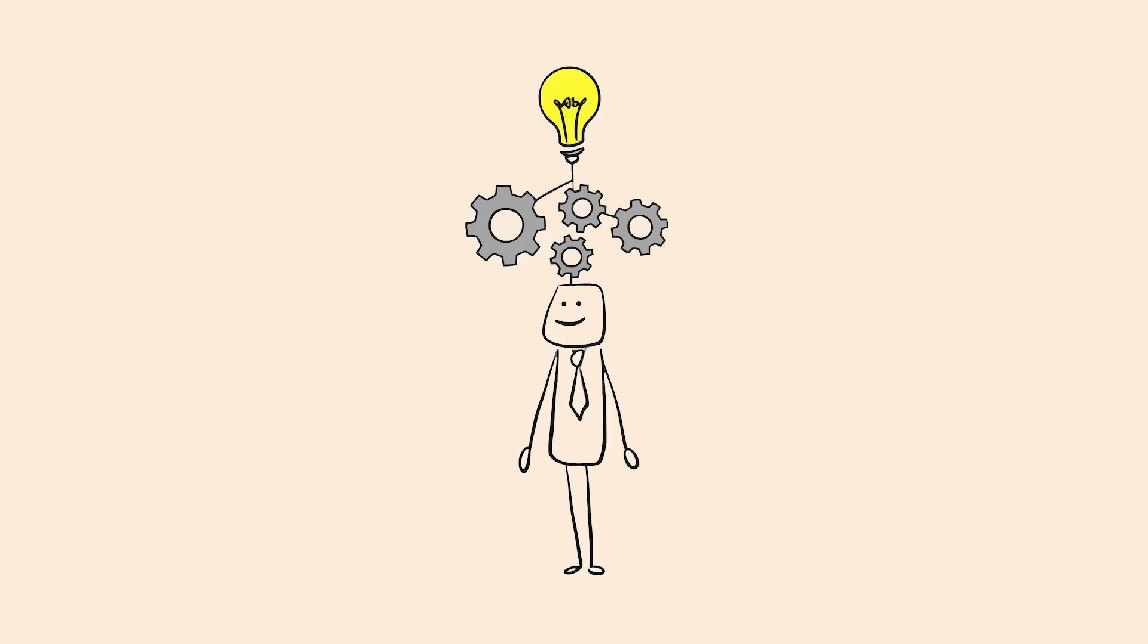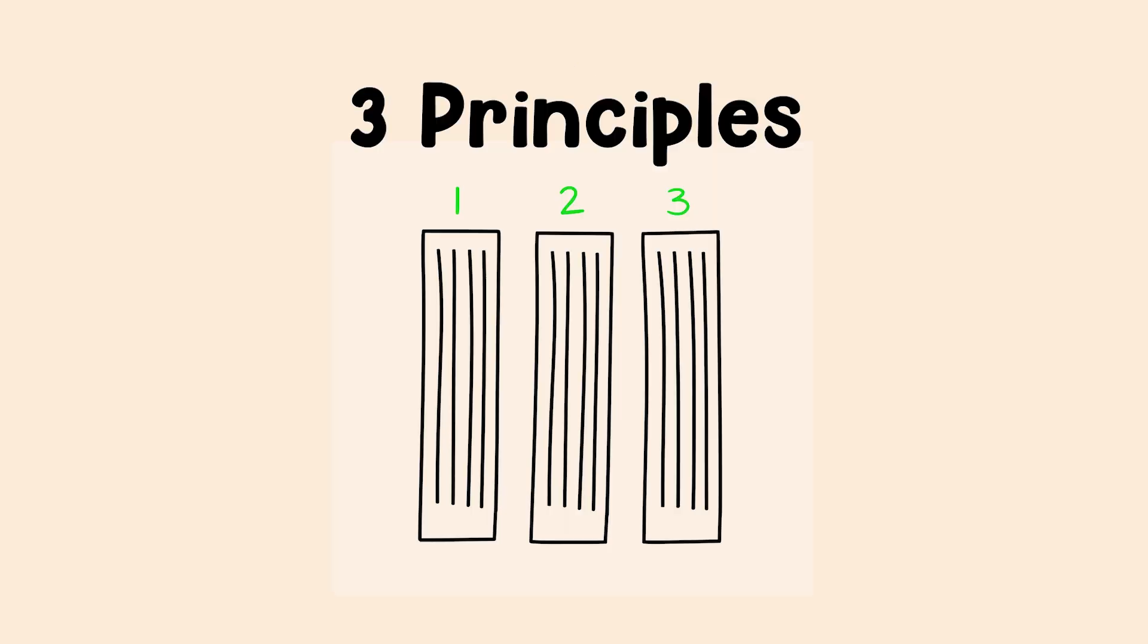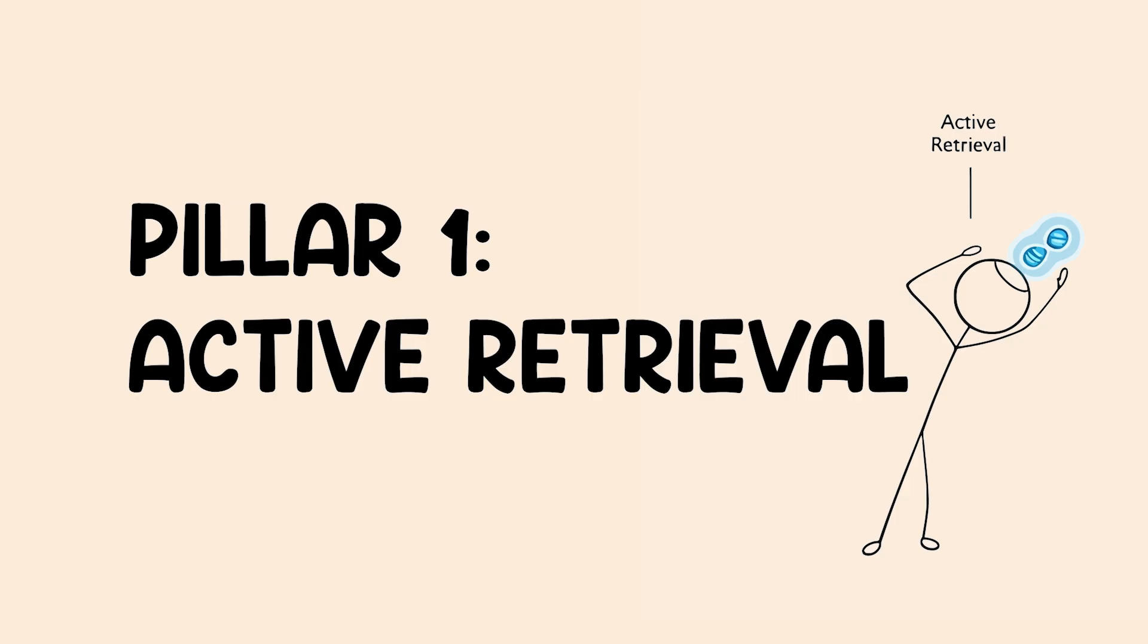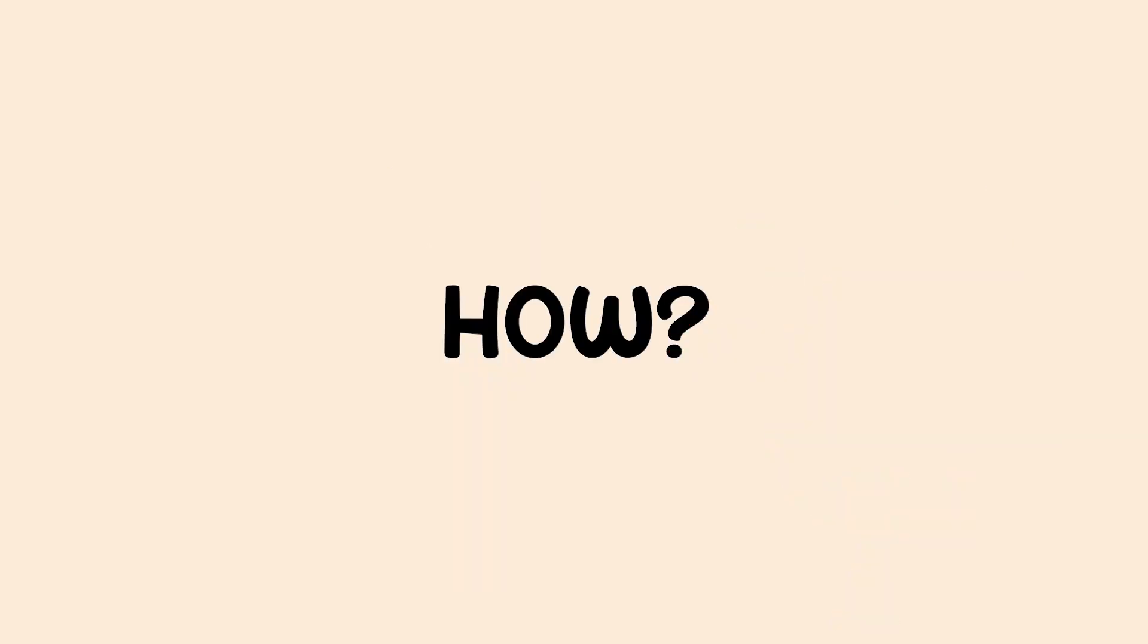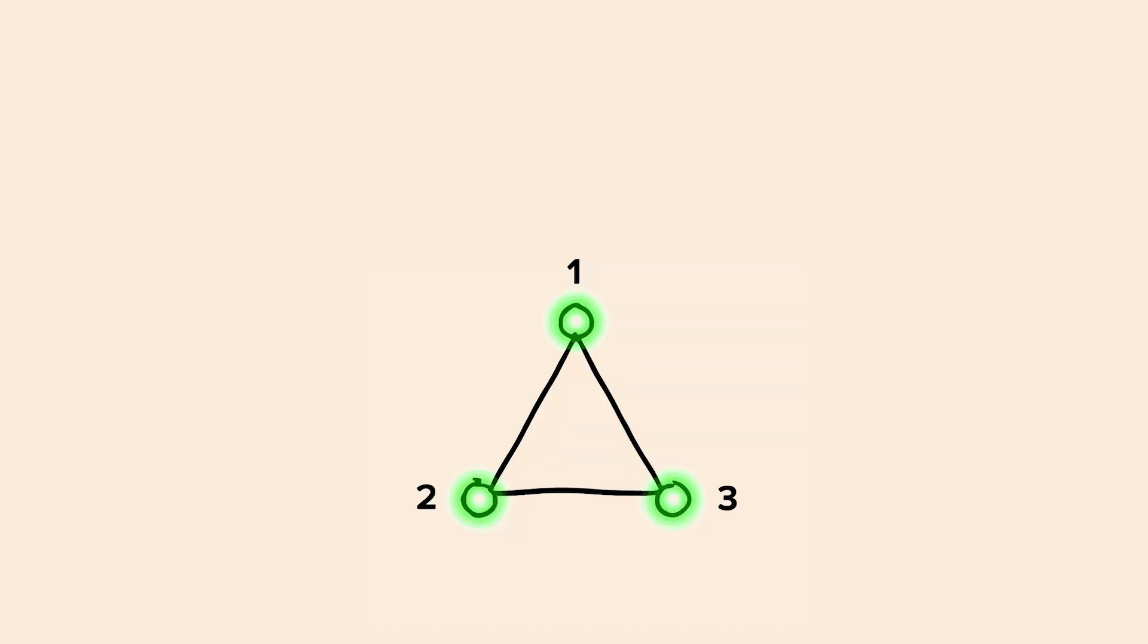How do we build a system around this one powerful idea? Well, it all comes down to three core principles that create a kind of triple threat for building a memory that actually sticks. And the first one is called active recall. Okay, so if the goal is to pull information out of our brain instead of just stuffing it in, how do we actually do that? It all comes down to a simple three-part framework. We need the system, the tools, and the mindset.